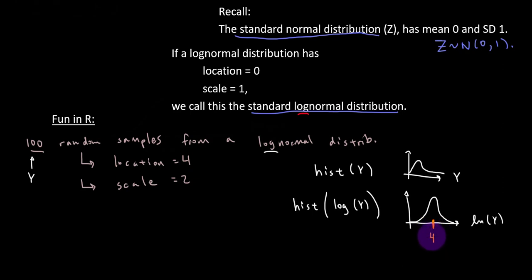That would be the center of the logarithm of the data, so that would be the location value, which would be 4. So we can also take the mean and standard deviation of the log of Y, and we'll expect to get 4 and 2. It probably won't be exact because we're creating random samples. This is 100 random values, but only one sample.